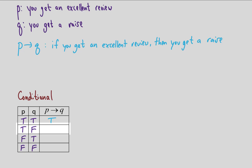In the second row, it is true that you get an excellent review, but you don't get a raise — that makes the conditional statement false. For the third row, you don't get an excellent review but you do get a raise anyway. Well, your boss hasn't lied; you just got a raise some other way, so the statement is still true. For the last row, you don't get an excellent review and you don't get a raise — your boss has held up their end of the bargain, since they only promised a raise if you get an excellent review. So this statement is still considered true.